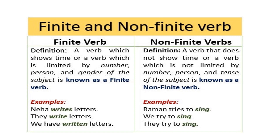Person and gender of the subject is known as finite verbs. This is the definition of finite verbs. We have written letters — this is an example of finite verbs.